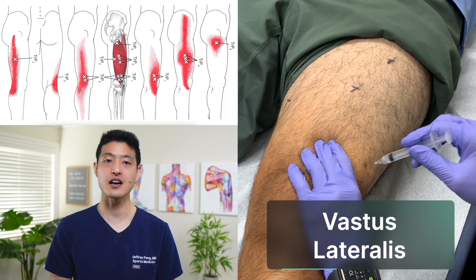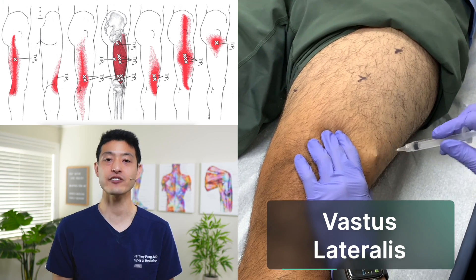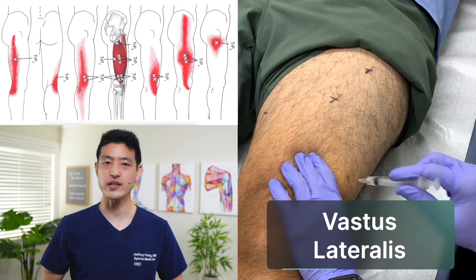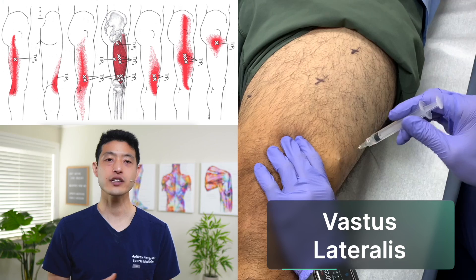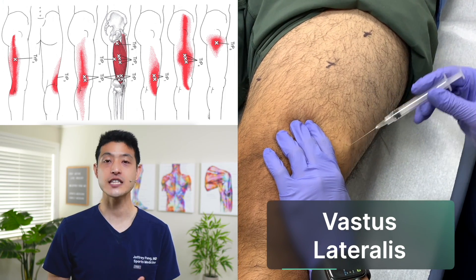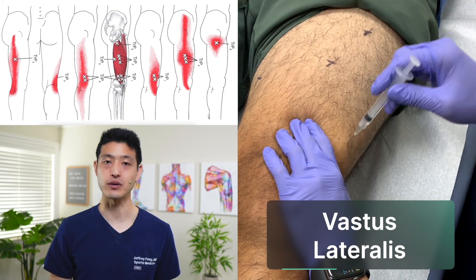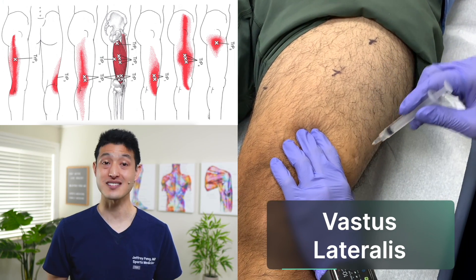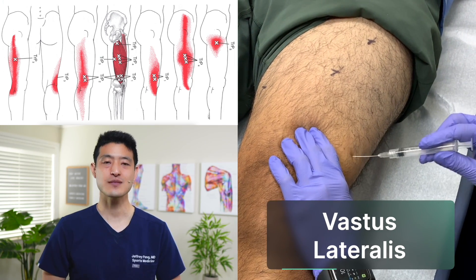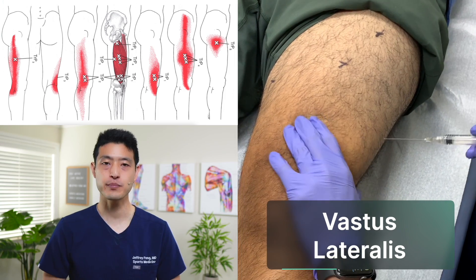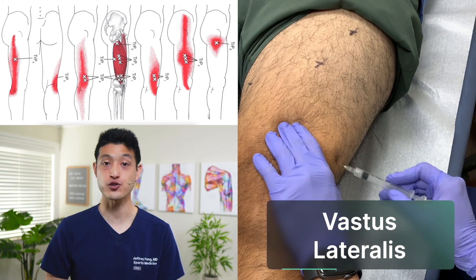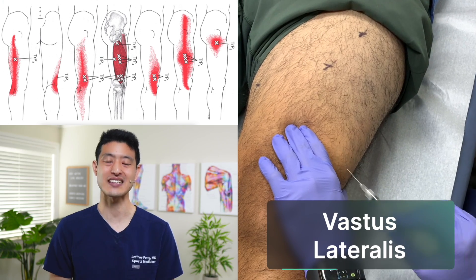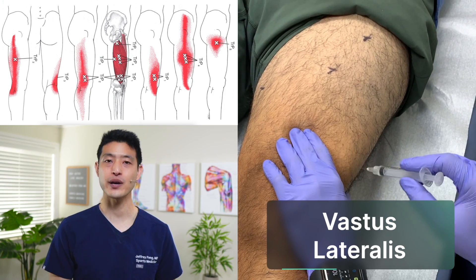This means that trigger points can cause pain and symptoms at a different location from where the problem is. Notice that I'm taking my time with these injections. I'm moving all around the locations of TRP1 and TRP2, fanning around trying to get as many local twitch responses as possible. Getting these muscle twitches are an essential component of a trigger point injection treatment. The twitches in the muscle are the trigger points releasing, and the more twitches we get, the better the outcomes.